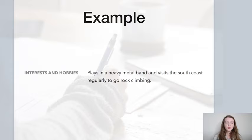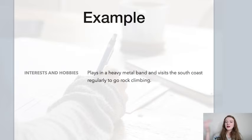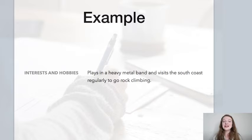Here's an example. On John's CV we have 'Interests and Hobbies'. Notice that it doesn't say 'I play...' because then it's all about me, me, me. Instead, remove the subject and write in third person: 'Plays in a heavy metal band and visits the south coast regularly to go rock climbing.' Sounds like John has a pretty interesting life.